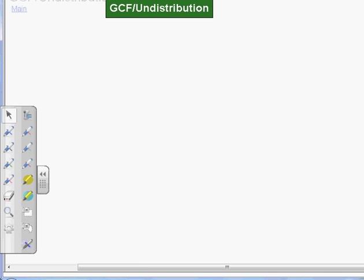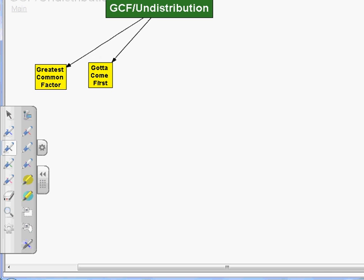GCF/undistribution—it shouldn't be too much of a surprise that GCF stands for greatest common factor. And we kind of joke around that GCF also stands for gotta come first. It really stands for greatest common factor, but what we mean by gotta come first is as you learn multiple factoring methods, you always want to look for this one first.